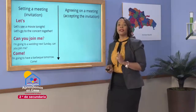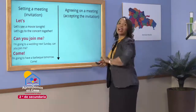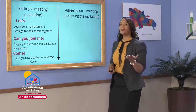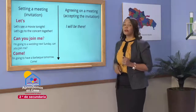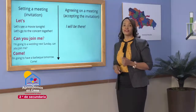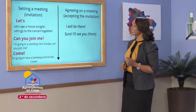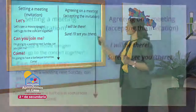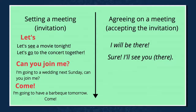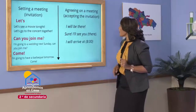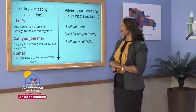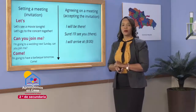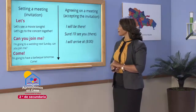When someone invites me to an activity, I can agree on that using the following expressions. Number one: 'I will be there' — estaré allí. Number two: 'Sure, I'll see you there' — claro, te veré allá. I can also indicate the exact place: 'I'll see you at school', 'I'll see you at the park', 'I'll see you at the diner.' Also, I can say the time I'll arrive: 'I will arrive at eight o'clock' — llegaré a las ocho en punto.